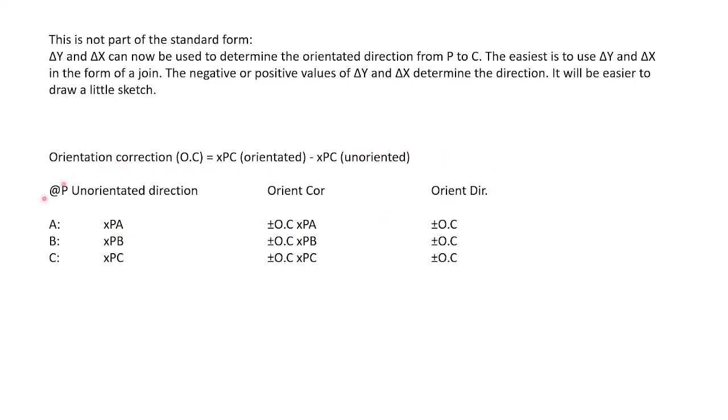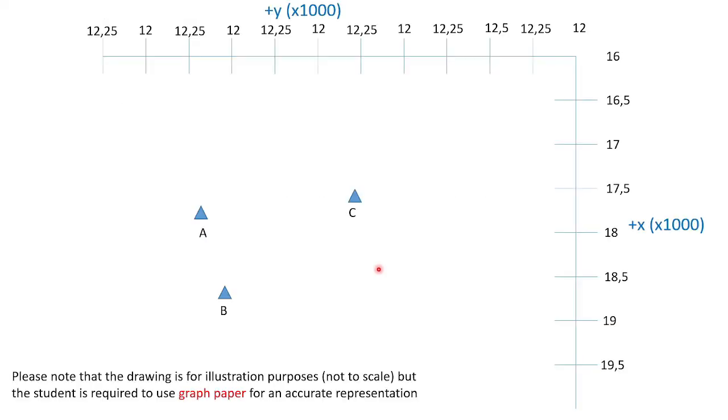So the orientated direction will be your xPC, because PC is your furthest point. So this will be used to orientate from your unorientated. Then the same as the Q-Point method, you take each of your unorientated directions, you add the orientated direction that you determine, and you get your orientated directions. For this example, you'll see A, B, and C. If you do the same as the Q-Point, and you do your directions, you'll see P is somewhere around here. So C is clearly the furthest point.